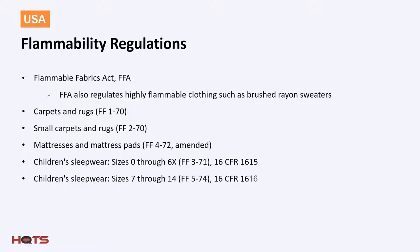The major legislation for flammability of textiles and apparel in the USA is the Flammable Fabrics Act (FFA). Under the FFA, the US CPSC has established standards for the flammability of apparel, vinyl plastic film used in apparel, carpets and rugs, children's sleepwear, mattresses, and mattress pads. The major laws and regulations are referenced on each line of this slide for your benefit.